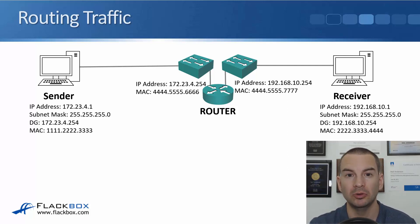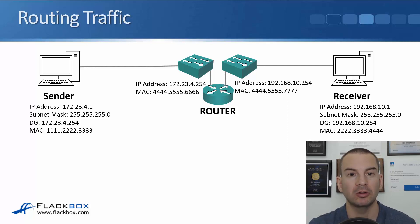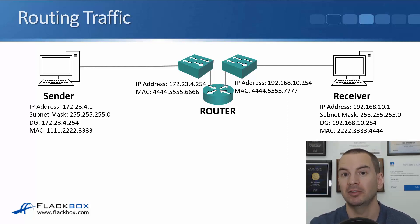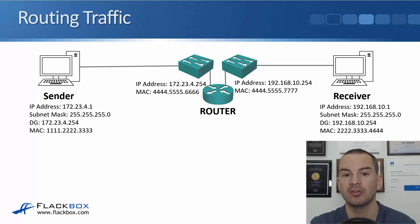When sending traffic between two different IP subnets, it has to go via a router. The sender won't send an ARP request for 192.168.10.1 — it knows not to do that because it compares its own IP address and subnet mask with the destination IP and sees it's on a different subnet. So instead, it sends an ARP request for its default gateway, 172.23.4.254.